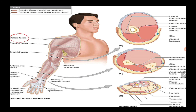In this image we can see the deltoid fascia. Inferiorly, it is continuous with the pectoral fascia — that is both the anterior and inferior aspect of the deltoid fascia corresponding to the anterior aspect of the pectoral fascia.